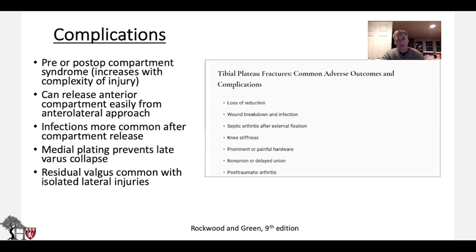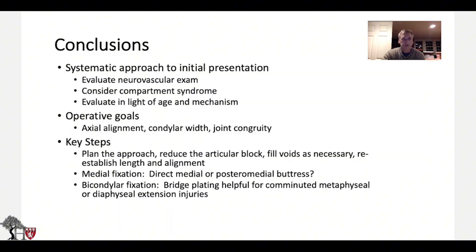Loss of reduction, arthritis, joint stiffness, and prominent painful hardware are also common complications — hardware we often take out. In conclusion: a systematic approach to initial presentation, paying attention to neurovascular exam and considering compartment syndrome. Operative goals are axial alignment, condylar width, and joint congruity. The key steps are to plan the approach carefully — look at the X-rays and decide if you need to go medial, posterior, lateral, or any combination. Thank you very much.